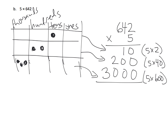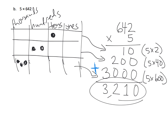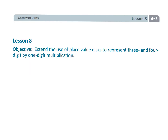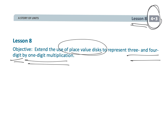We're going to add all of this up. Zero plus zero plus zero is zero ones; one ten plus zero plus zero is one ten — so 110; two hundreds plus nothing is two hundreds; and three thousand. So our answer is three thousand two hundred ten. And that wraps up fourth grade module 3 lesson 8 — multiplying three and four digit numbers by one digit, still using the place value disk but moving towards that partial products method.